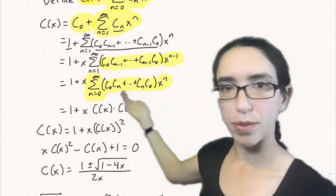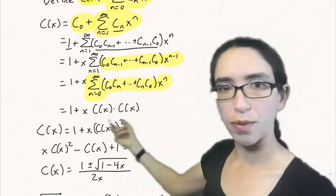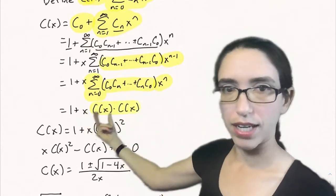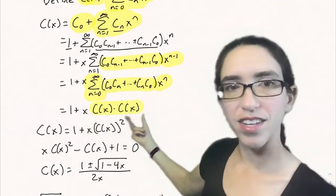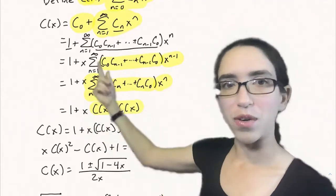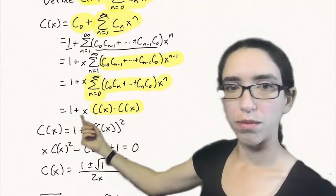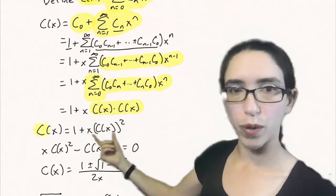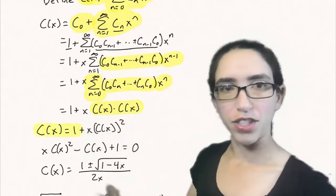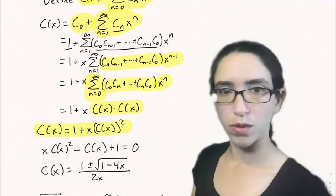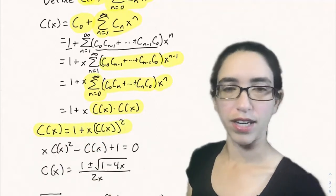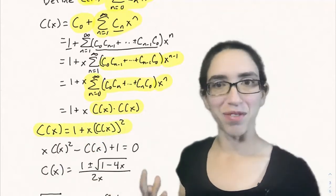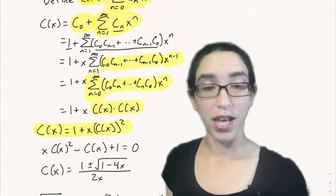This is actually the nth convolution of the sequence c with itself, which must be the nth term in the product of two generating functions c(x) and c(x). So this simplifies to 1 plus x times c(x) squared. Therefore c(x) equals 1 plus x·c(x)², meaning c(x) satisfies this quadratic equation. We can solve for c(x) using the quadratic formula.